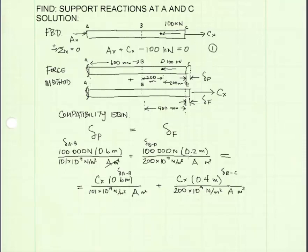You can see in all these equations, the cross-sectional area cancels out because it's the same. And now I can simplify with algebra. Simplifying, I get Cx is equal to 87.42 kilonewtons.